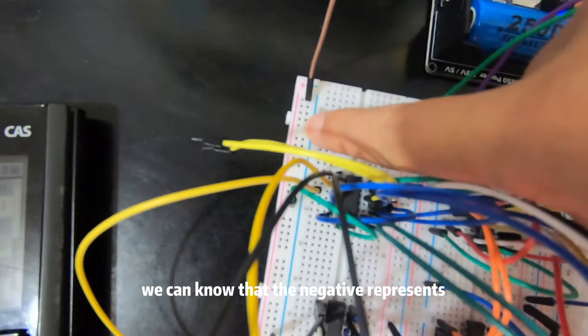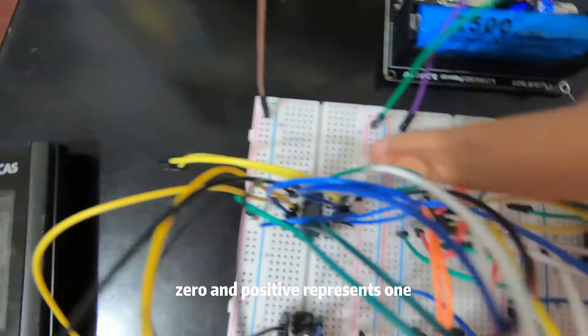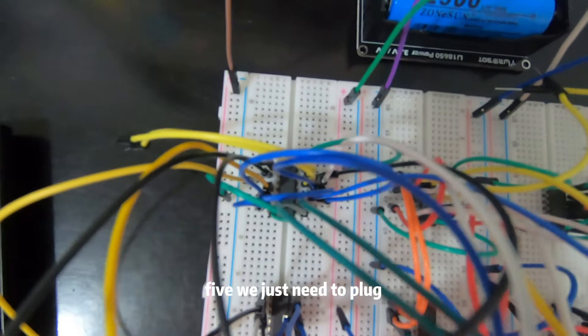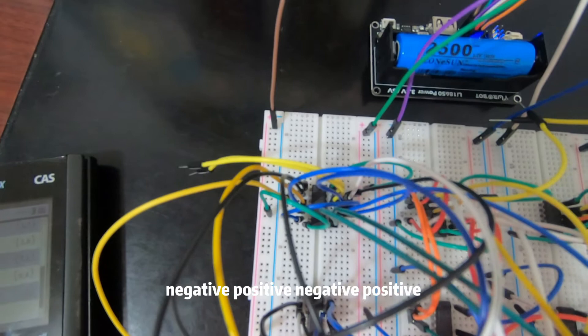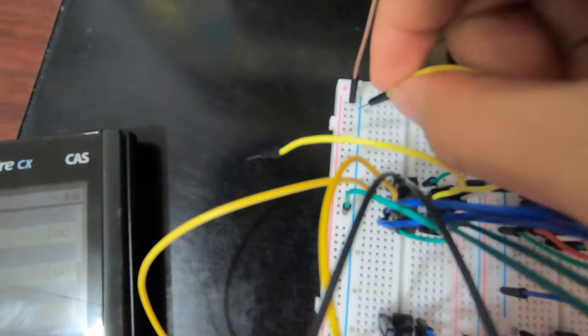So when we want to represent five, we plug the pins as negative, positive, negative, positive. Let me do this: negative, then positive, then negative, then positive.